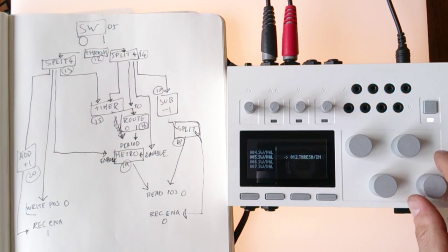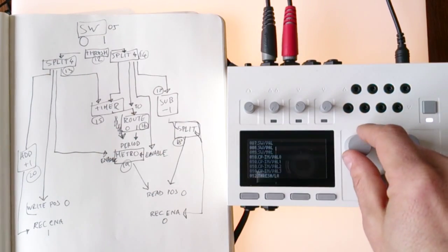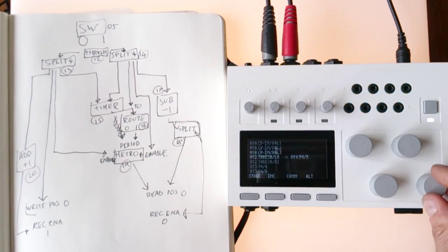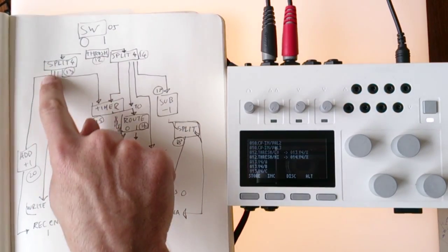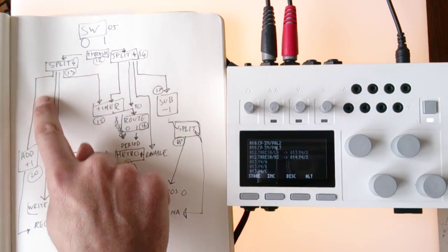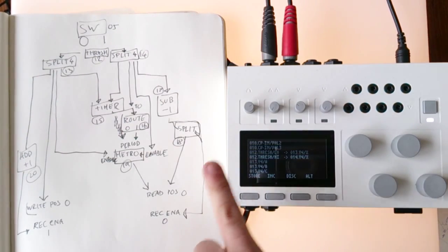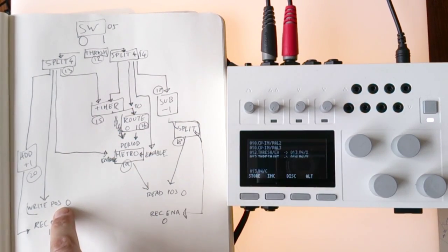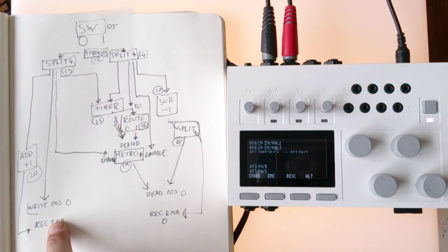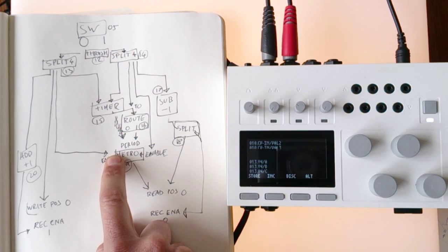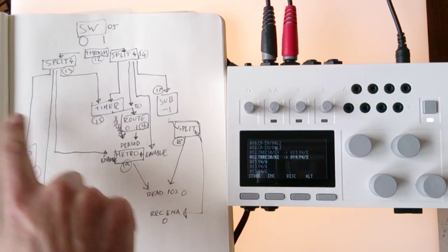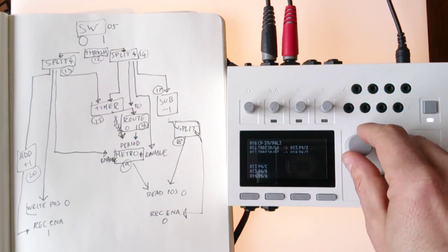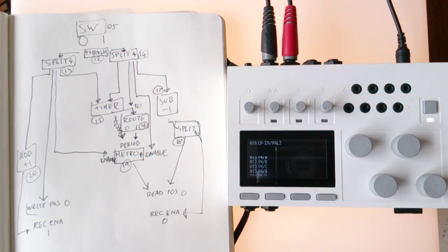Now for the connections. I connect switch 1 value to threshold 12. The threshold low output goes to split 13 and the high goes to split 14. The order of outputs from splits sometimes matters — with splits it goes out top to bottom. I want to set the right position, then record enable, then the metro, then the timer. I think this should be okay, but if you find problems in your system it might be the order that you're sending things out.